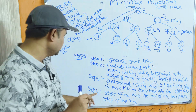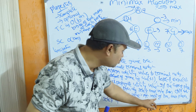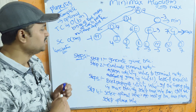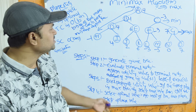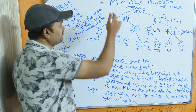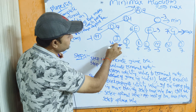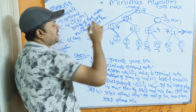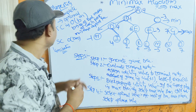Step four: select the optimal value at the root. The Max player chooses the maximum value. Out of 4 and -3, the maximum is 4, which is propagated to the root node. So 4 is the optimal move. Even though 7 is the highest terminal value, the optimal path leads to 4 — this is the optimum path.